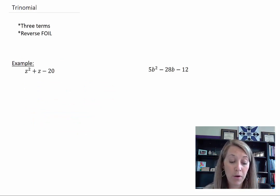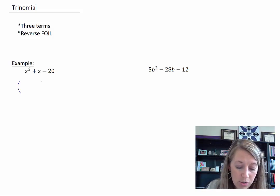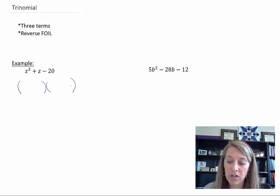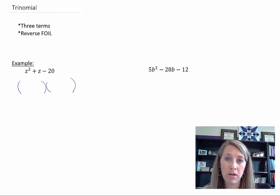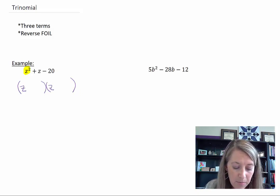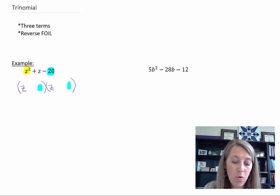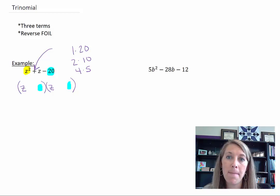Trinomial — it's got the prefix 'tri' so it only works with a polynomial that has three terms. I teach this as a reverse FOIL method. So if I have a trinomial I set up my two sets of parentheses. My FOIL process starts with my first: what times what gives me z²? That's z times z. Then my last: what times what gives me 20? I have a few options: 1 × 20, 2 × 10, and 4 × 5. But I need to add or subtract these to give me my middle term.